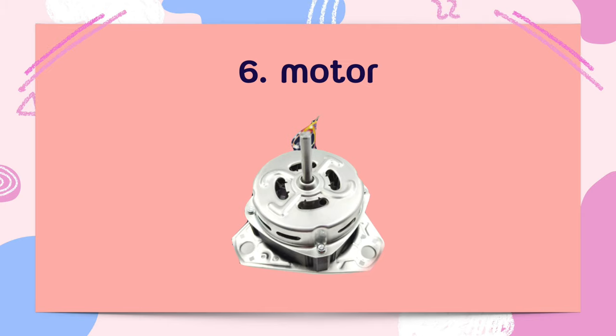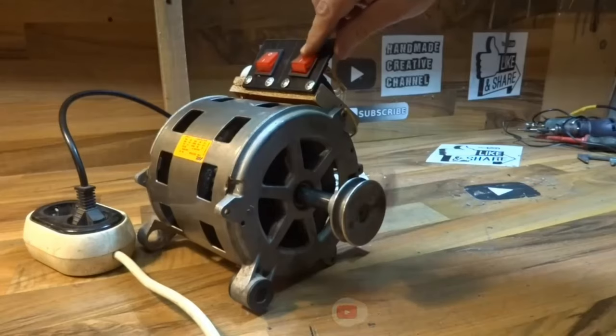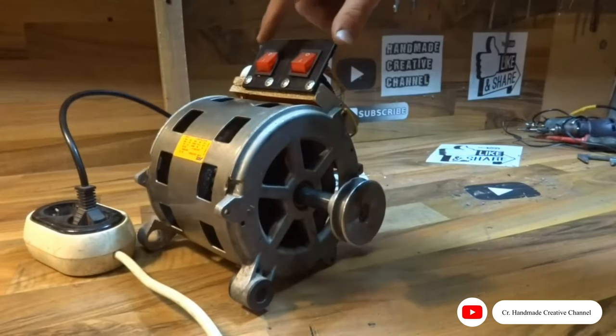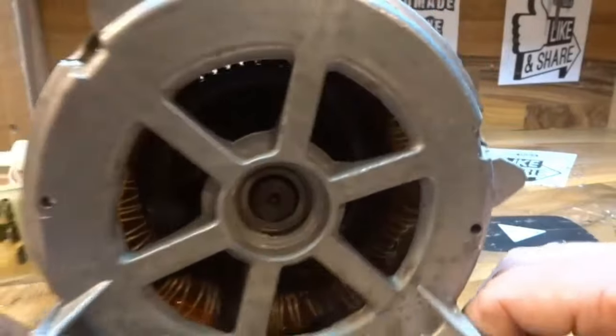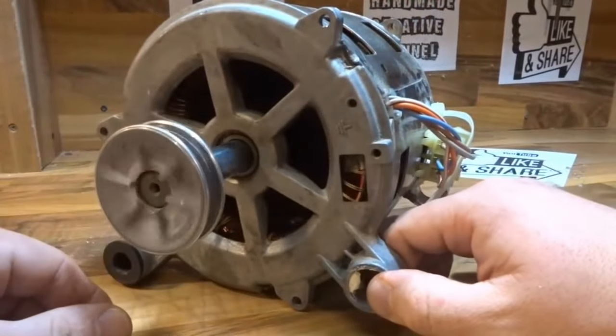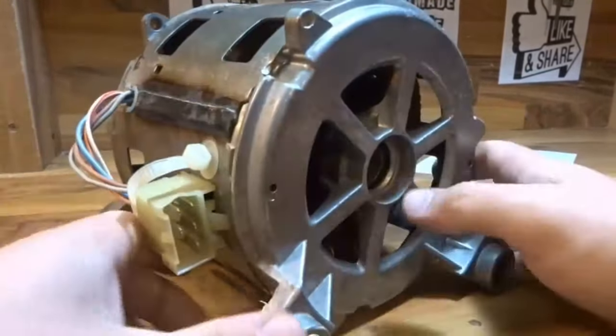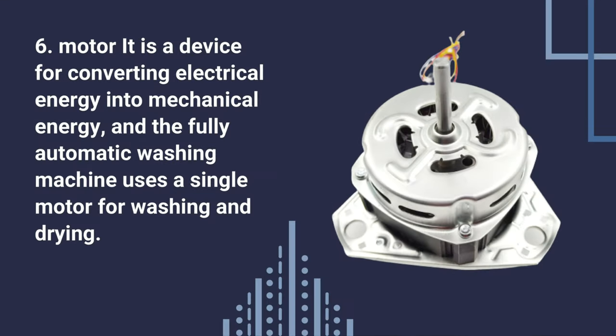Six, Motor. It is a device for converting electrical energy into mechanical energy. In a fully automatic washing machine, this has a single motor for both washing and drying.